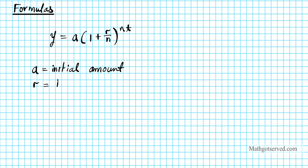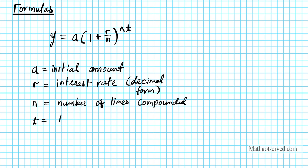R is the interest rate in decimal form. You've got to keep that in mind. n is the number of times compounded. t is time. And y is the final amount.